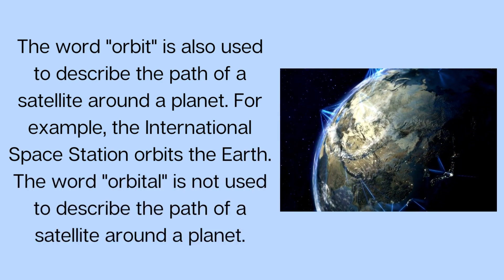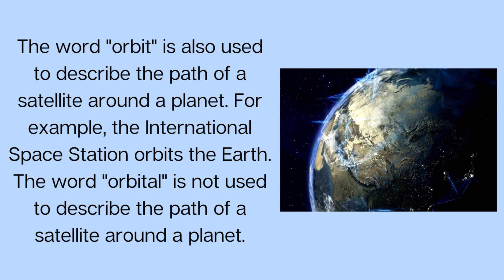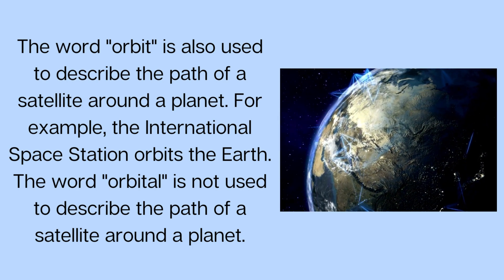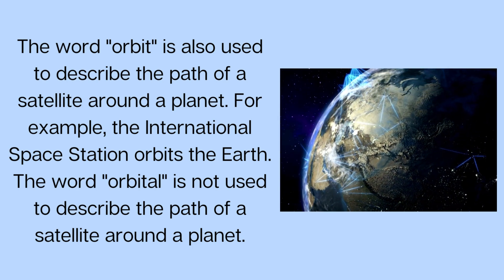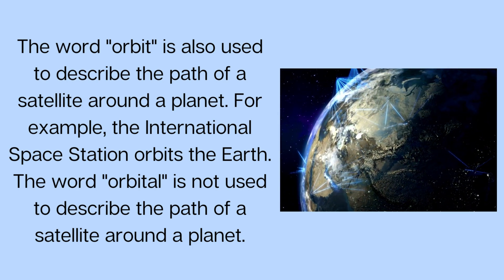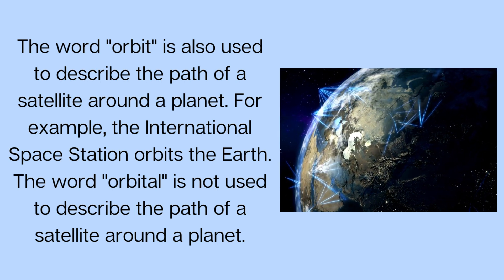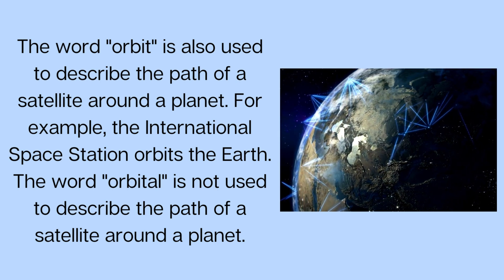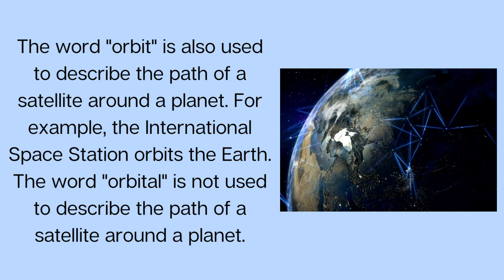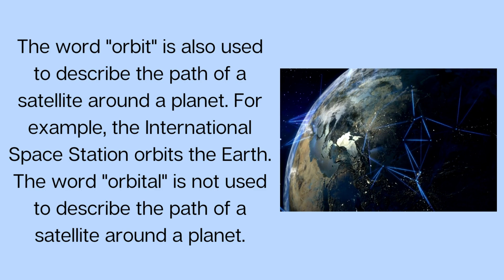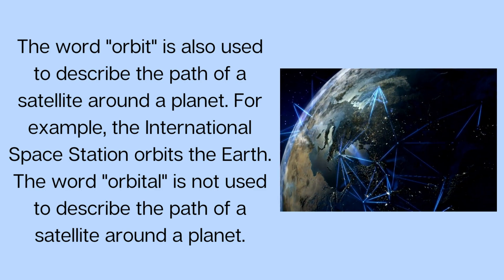The word orbit is also used to describe the path of a satellite around a planet. For example, the International Space Station orbits the Earth. The word orbital is not used to describe the path of a satellite around a planet.